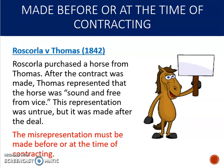It's also important that the misrepresentation is made before or at the time of contracting. This is a logical rule because if the misrepresentation was made after the contract was formed, then clearly it wasn't what induced the contract. That's illustrated in Roscorla v Thomas, where Roscorla purchased a horse from Thomas and after the contract was complete, Thomas represented that the horse was 'sound and free from vice.' This turned out to be untrue, but since it was made after the deal had already been concluded, it wasn't actionable in misrepresentation.